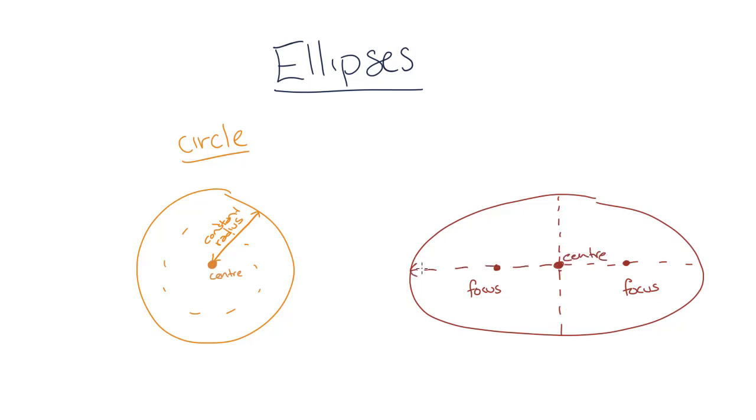Ellipses have both a long radius and a short radius, called the semi-major axis and the semi-minor axis respectively. So ellipses are basically elongated circles.